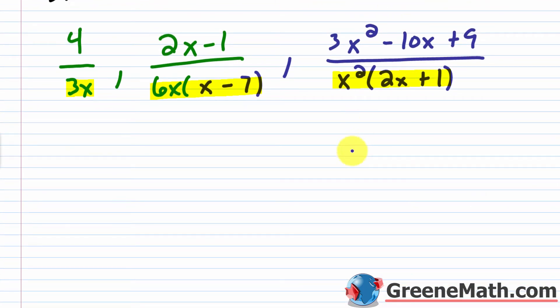So when you find the LCM, you basically build it from the prime factors. Now when variables get involved, when binomial factors get involved, it gets a little bit confusing. So let's first start with everything that we have. We have 3x. So I would put that in.